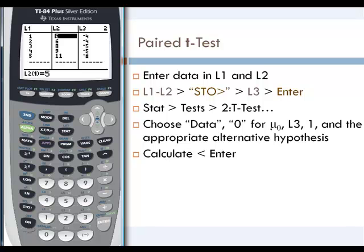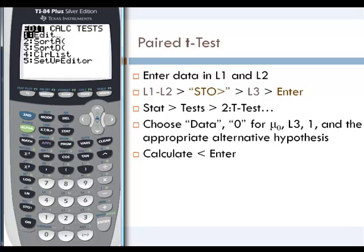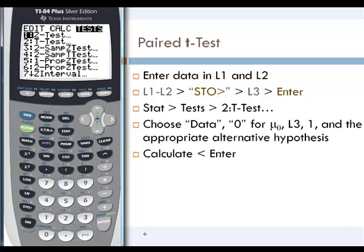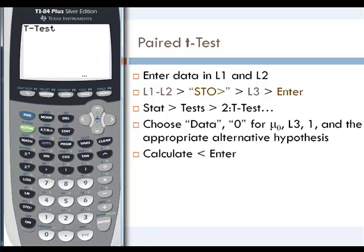Now what we'll do is we'll do a plain t-test on L3 to see if that data is equal to 0. If we're hypothesizing that these means are equal, then we want to STAT and scroll until we get to test, and then look at the t-test, and we'll do the data option. Whenever we're using this paired method, we're going to use the data that's in L3. We're just using the one sample t-test. This t-test is just for the one sample.